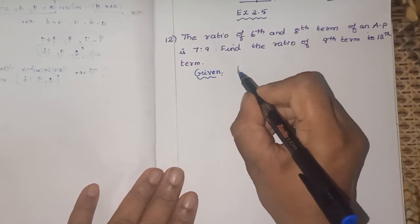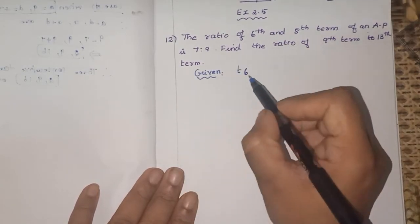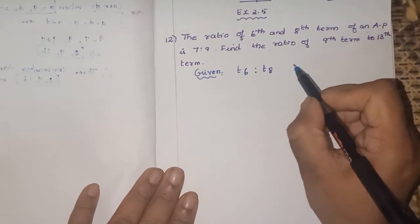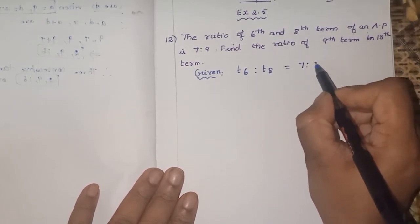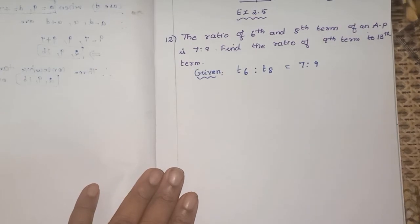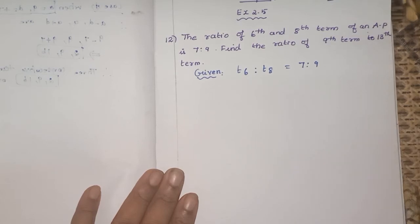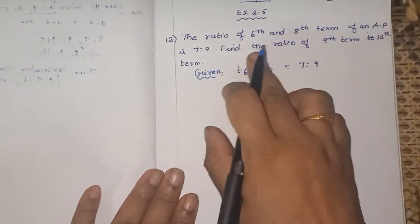It is 6th term means T6. The ratio can be written as T6 is to T8, is equal to 7 is to 9. This is the only given data, from this we have to take out something, we have to conclude something.